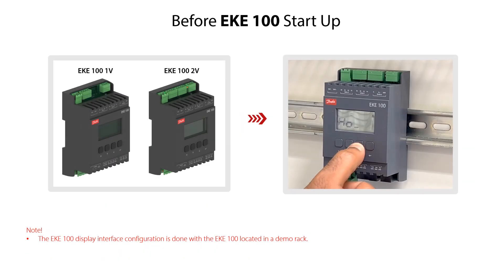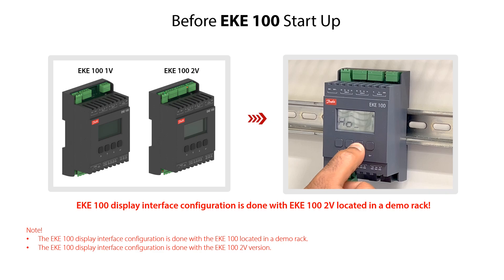All EKE100 display interface configuration examples are done with the EKE100 located in a demo rack, but the configuration procedure is the same for the EKE100 located in a refrigeration system. We demonstrate the display interface configuration using the EKE100 2V version as seen here. Most configuration procedures and the navigation structure are identical for the 1V and 2V versions. Whenever there are any deviations, we will highlight this during the configuration videos.